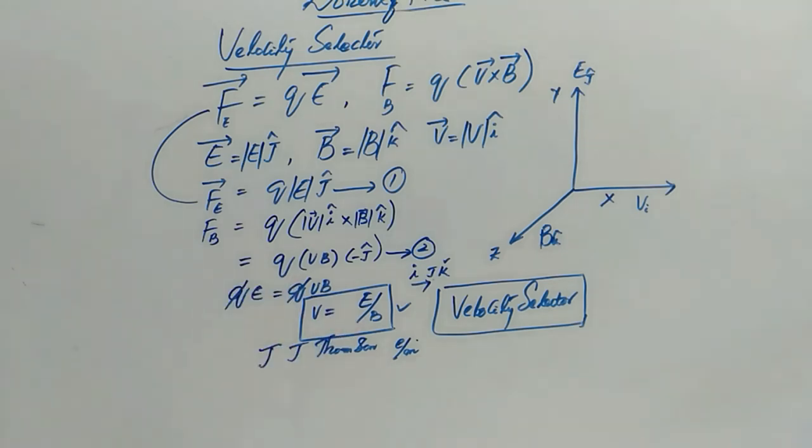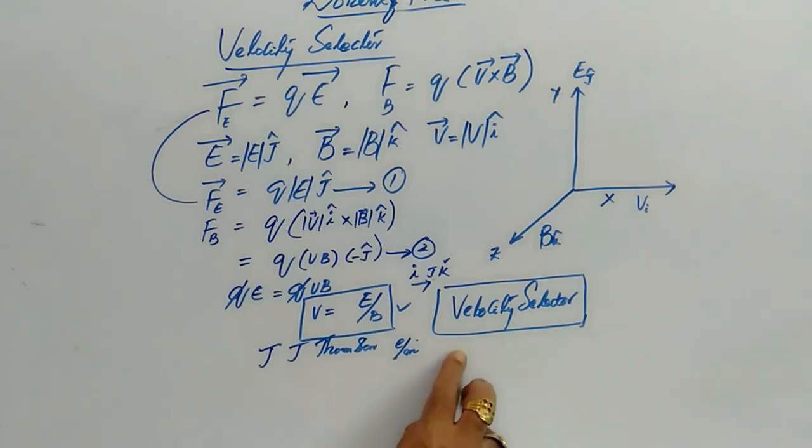So this is the work function of velocity selector. The application of velocity selector will be there in mass spectrometer, a device that separates charged particles. With the help of this we can find out the velocities of the isotopes and velocities of the original charges.